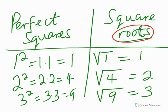So, what is a root? We define a root as this: the root of a number, say p, is defined as another number which, when multiplied by itself a given number of times, equals p.